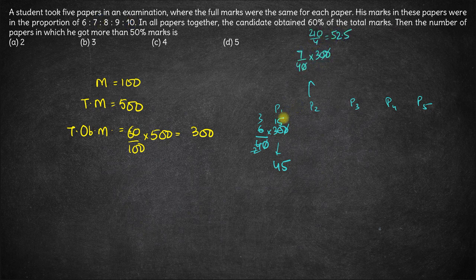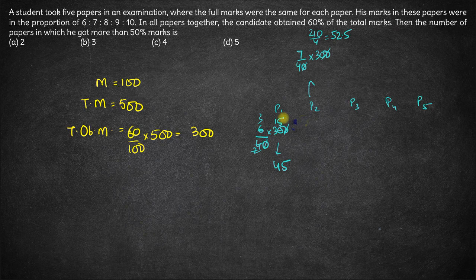Now what we have to figure out is in how many subjects he got more than 50%. So 50% of 100 is 50. So we have to figure out in how many subjects he got more than 50 marks.